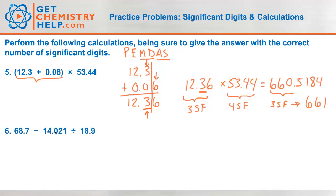Last one. 68.7 minus 14.021 divided by 18.9. According to PEMDAS, the order of operations, we have to divide first, and then we'll subtract next. So 14.021 divided by 18.9. That gives me 0.74185. We're dividing. So when you're dividing, you consider the fewest significant figures. This has five sig figs. 18.9 has three sig figs. Five and three, the fewest is three, so the answer can only have three. That would round off to 0.742.